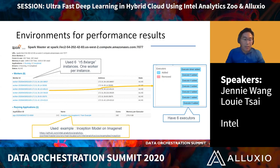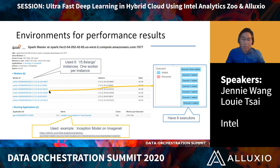You can see there's a running application — the Analytics Zoo Inception V1 training example. Totally, because we're using six instances, we have 192 CPU cores. For each instance, we have 160 gigabytes of memory. You can also see there are six workers from the Spark master webpage. Looking at the timeline, you can see there are six executors — one executor per worker. This is our layout for the experiment.